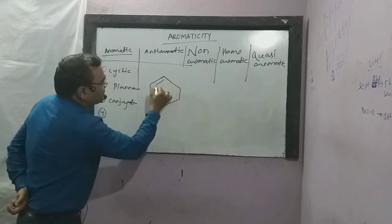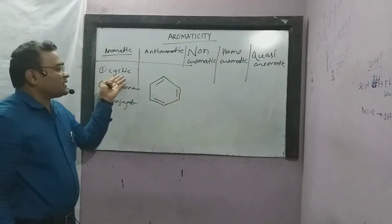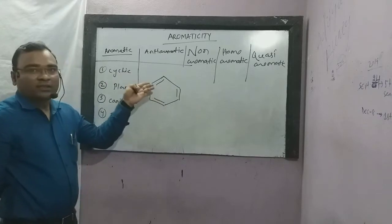Let's take benzene as an example. Condition: cyclic, and conjugation is present.